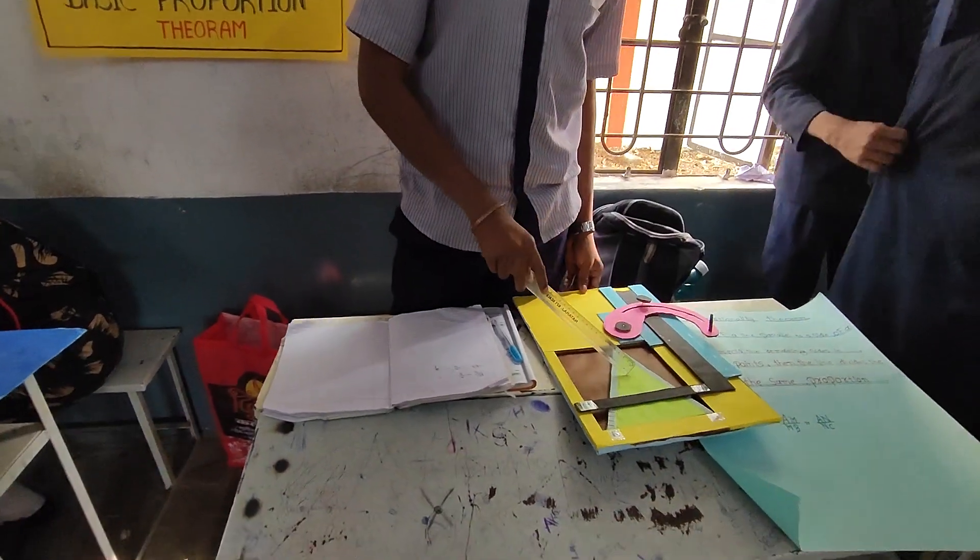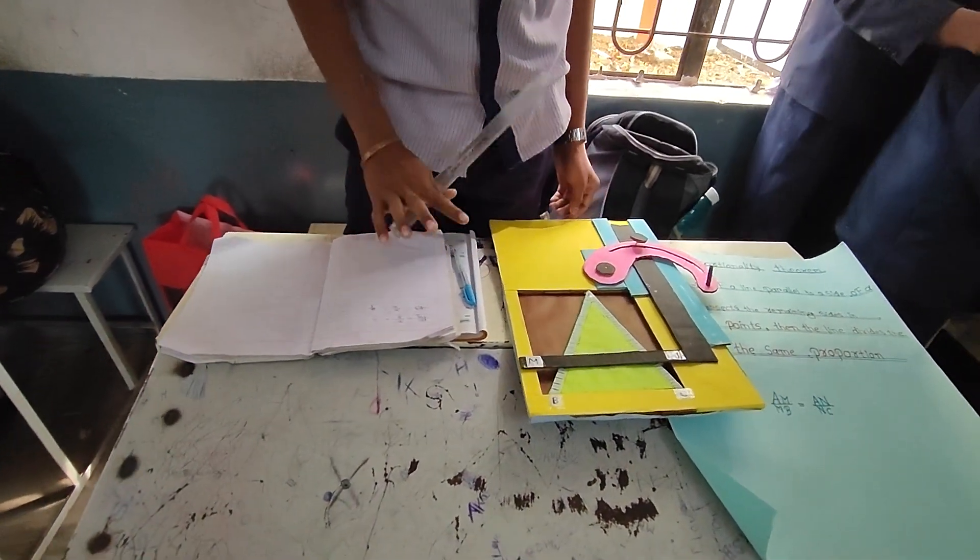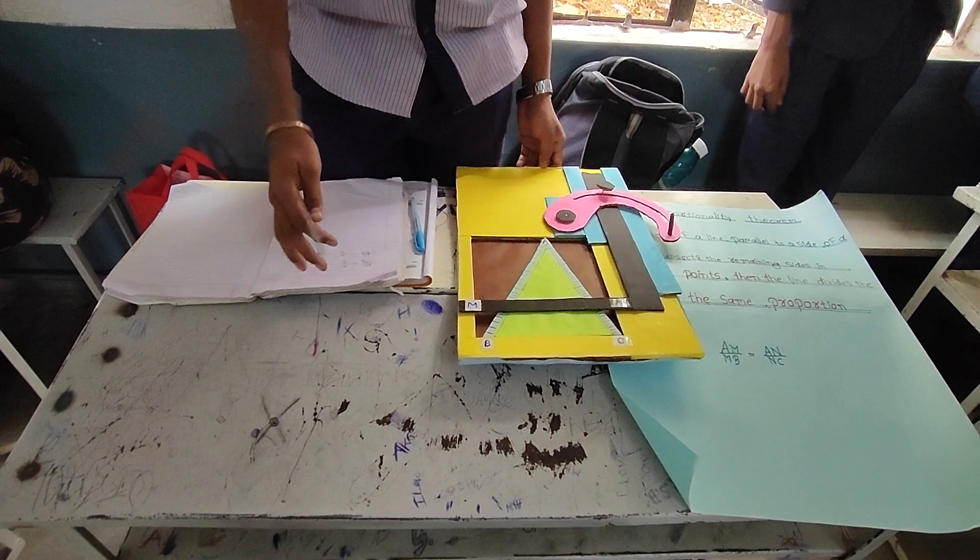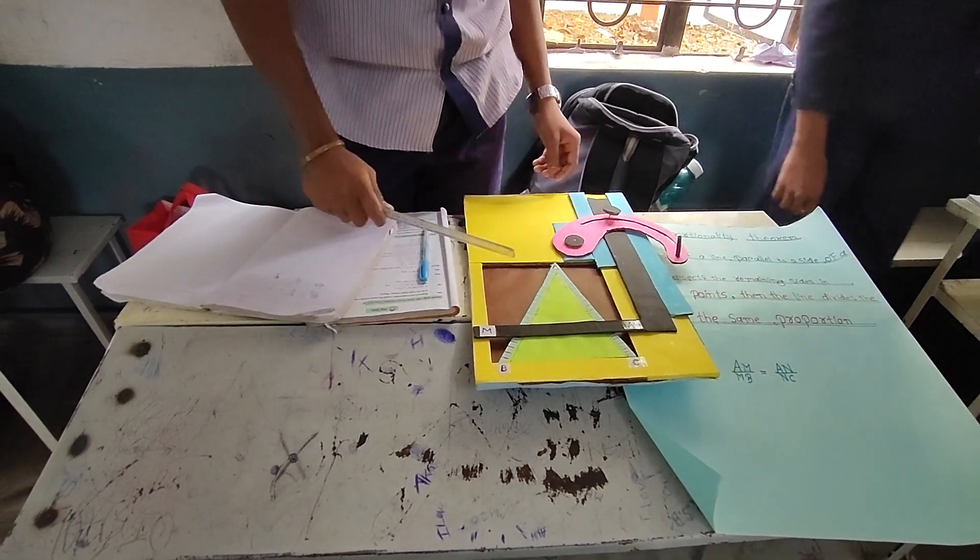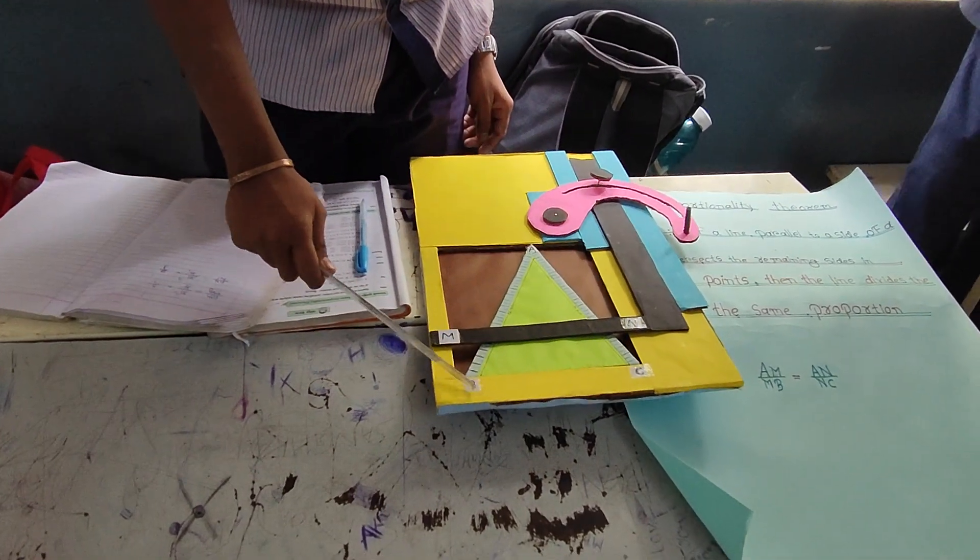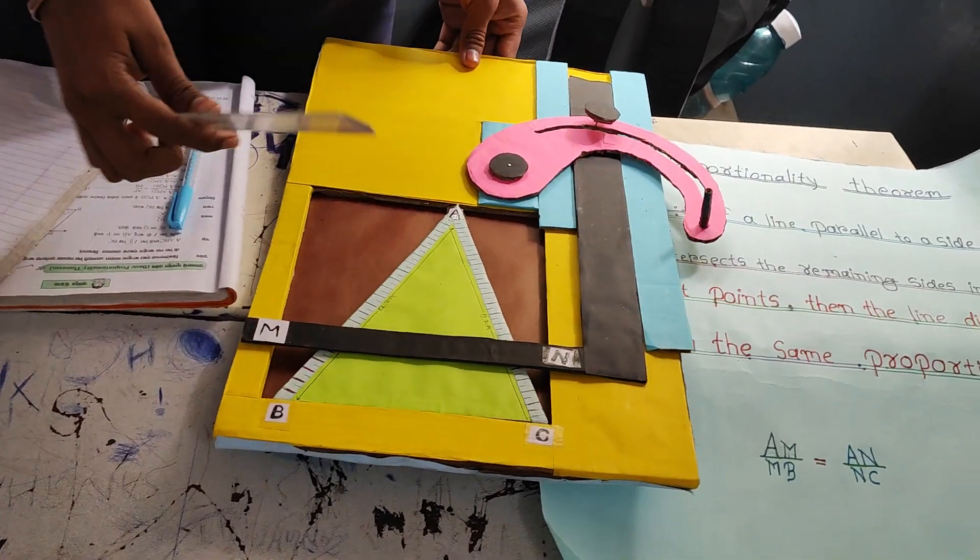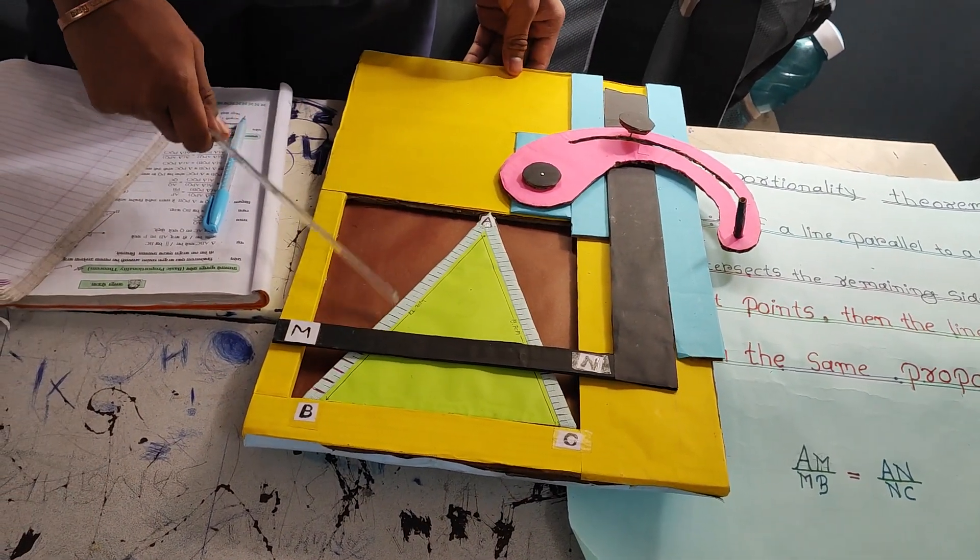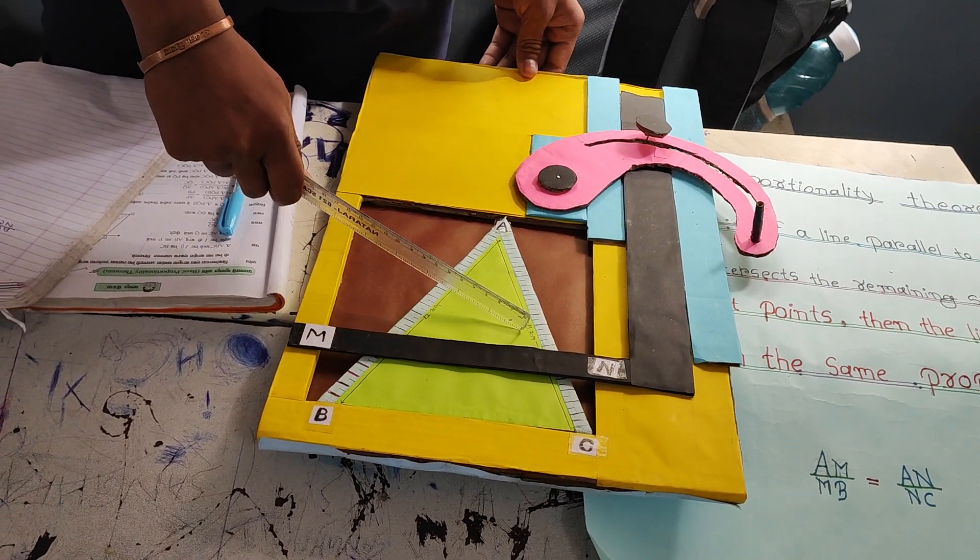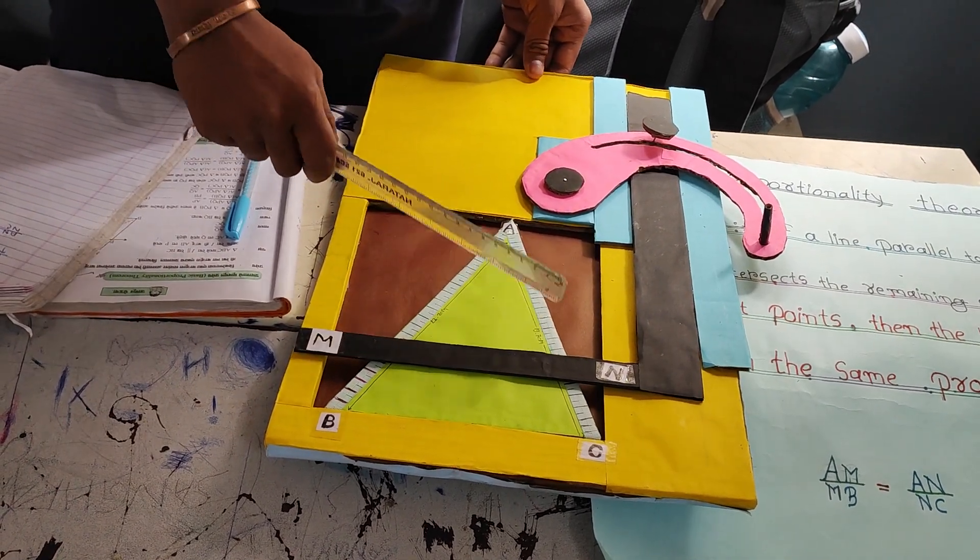Today, we will demonstrate this. This is BC parallel to MC. This line is 22.2 cm, this line is 19.7 cm.